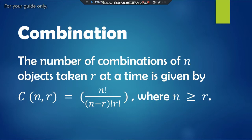Since it is represented by a number — as you can see there are six in that example — that number can also be obtained by following a formula. The number of combinations of n objects taken r at a time is given by this notation: C(n, r) equals n factorial divided by the quantity (n minus r) factorial times r factorial.